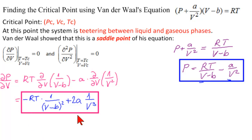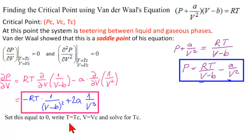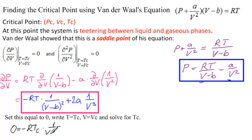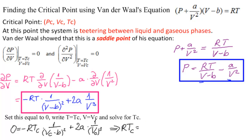Because we're looking for TC, VC, and PC, we set this equal to zero, writing T equal to TC and V equal to VC. Solving for TC gives: 0 equals negative RTC over (VC minus B) squared plus 2A over VC cubed. Solving for RTC, we get RTC equals 2A times (VC minus B) squared over VC cubed.